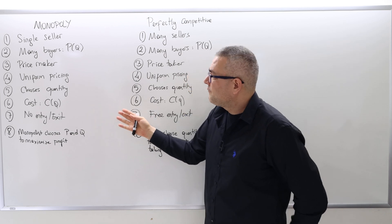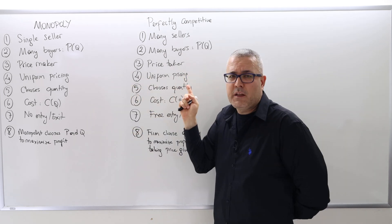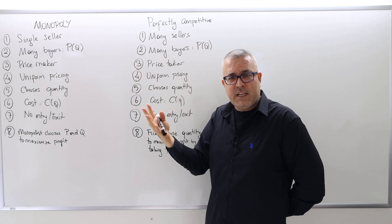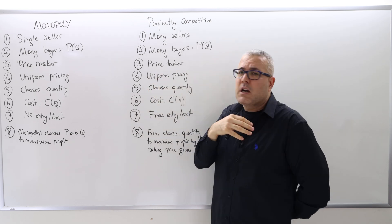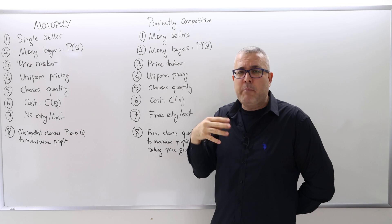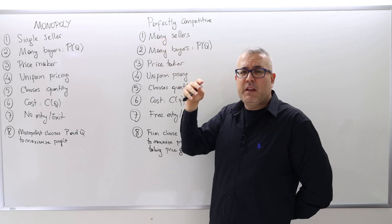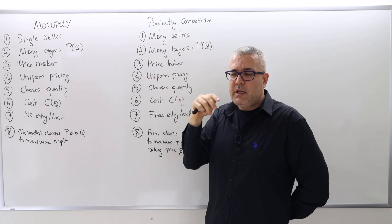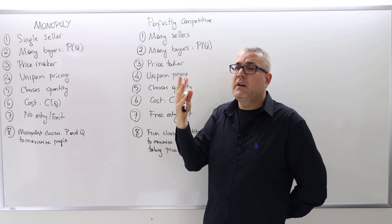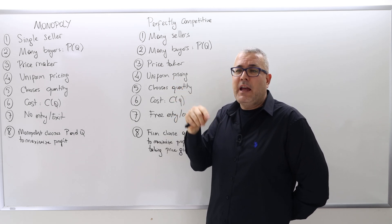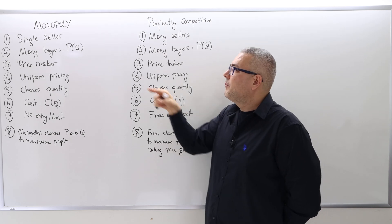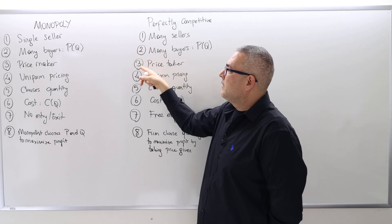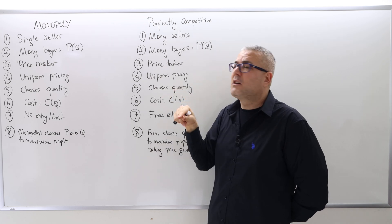Comparing the assumptions: in the monopoly we assume there is a unique seller, while in a perfectly competitive market there are many sellers. The number of sellers matters because in a perfectly competitive market, each firm is powerless — it cannot change the market price. But the monopolist can. This assumption is actually going to influence assumption three later, so those assumptions are related.